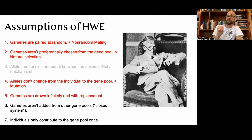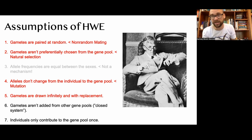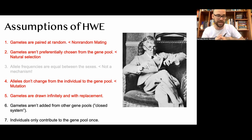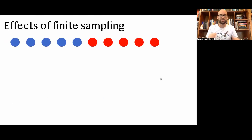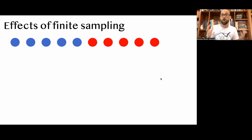Today we are looking at the fifth violation: that gametes are drawn infinitely and with replacement. When they are not drawn infinitely and with replacement, we are actually looking at a finite sampling scheme — and that is what we call genetic drift. Let's start by taking a broad view on what the effects of finite sampling are.